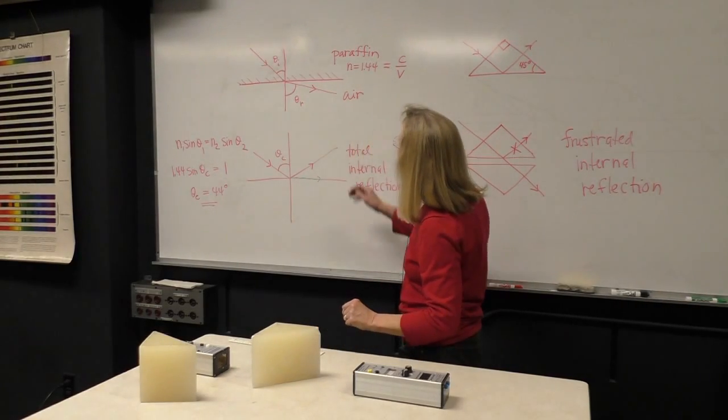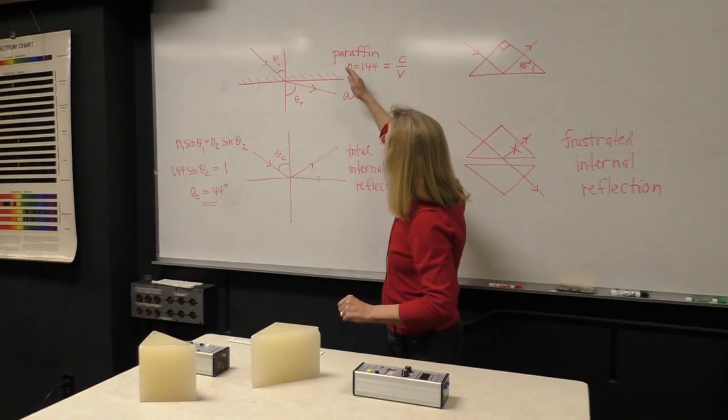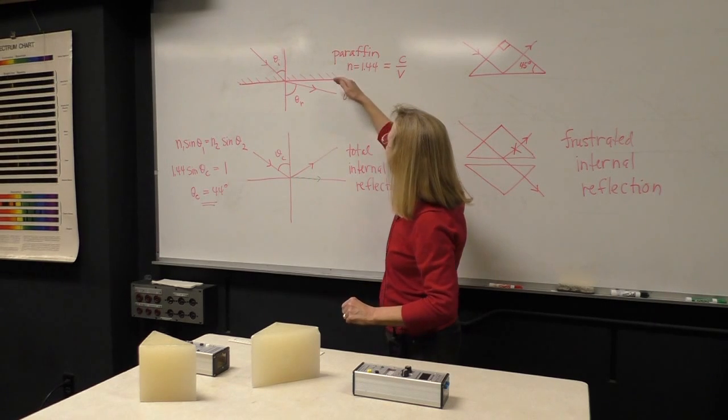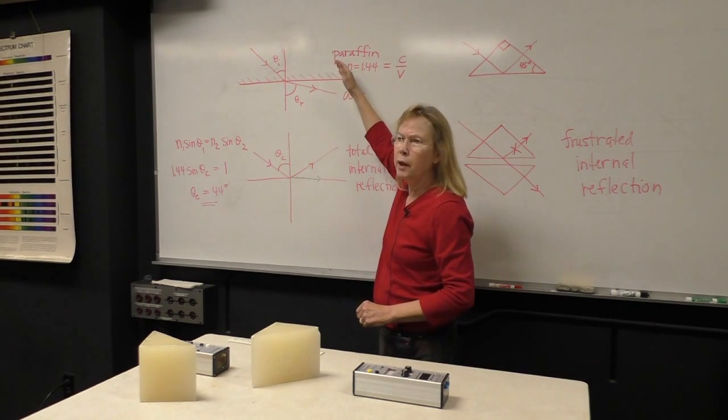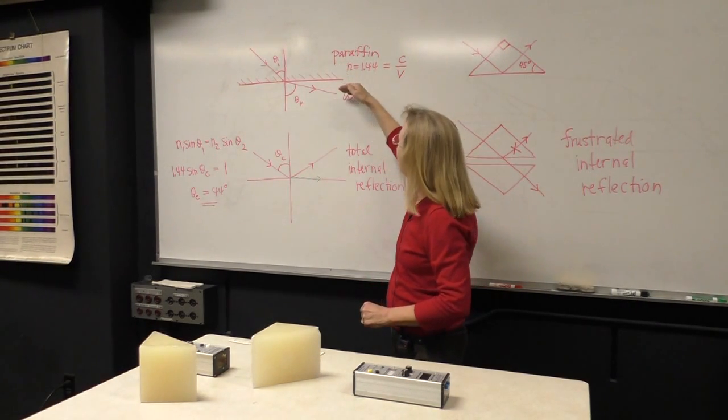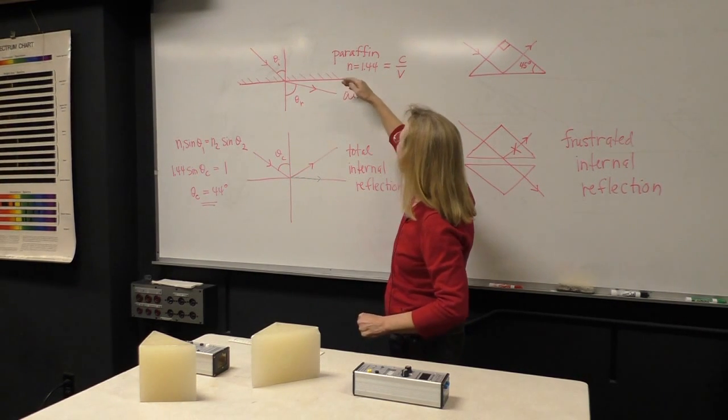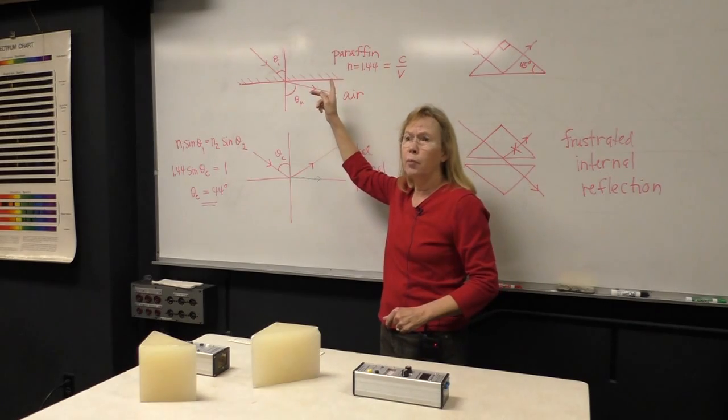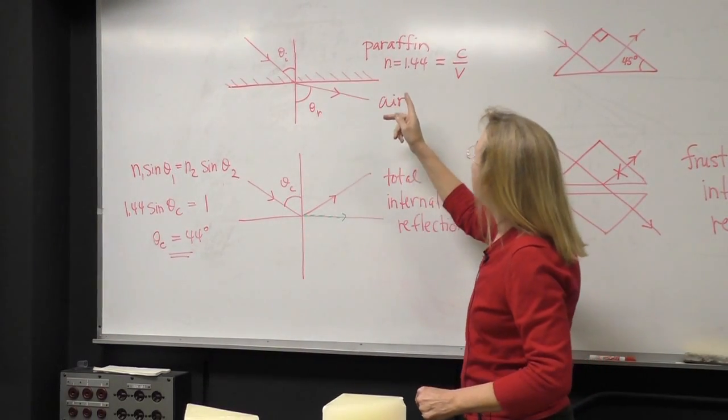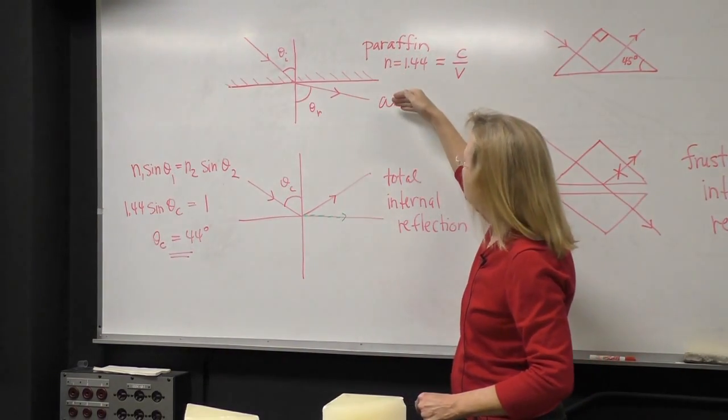So to start out with, we know that we are going to have refraction if we have waves coming from a medium with one speed and traveling into a medium with another speed. And in this case, I'm going to have electromagnetic waves traveling from paraffin into air.